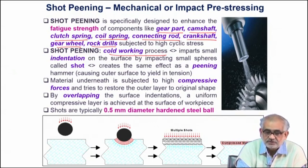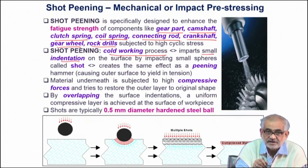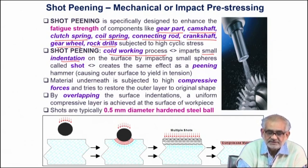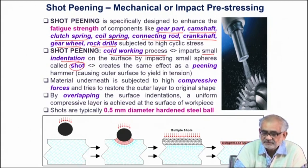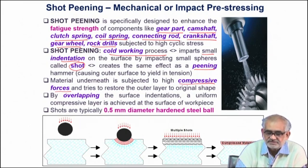Shot peening imparts small indentations, just like pressing a hardened steel ball onto the surface in hardness testing, but the spherical objects thrown are ultrafine — very small. The indentation size is very small, made by so-called spherical objects called shots. The effect is called peening, very similar to peening with a hammer. The forces applied for individual impact are compressive in nature, creating a very small deformation zone.